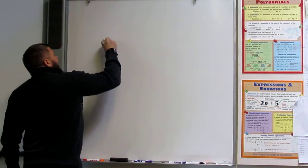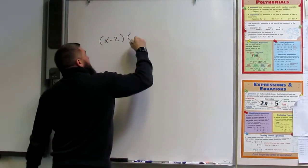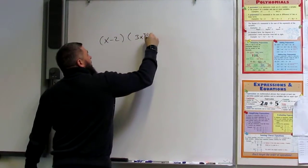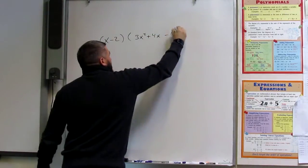So let's say I've got (x - 2) times (3x² + 4x - 1).